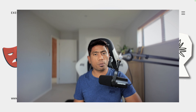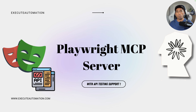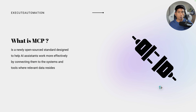A couple of weeks ago I talked about the Model Context Protocol from Anthropic Claude, which has the feature to talk to your local context — your local application or local browser — to perform operations you're looking for. MCP stands for Model Context Protocol, which is an open source standard to help AI assistants work more effectively by connecting them to systems and tools where relevant data resides.